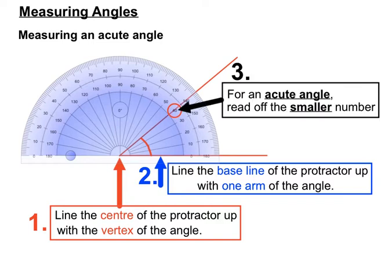And then for an acute angle we'll read off the smaller number. You'll notice there that we have two numbers: we have 140, just here, and we have 40 degrees. Because we're expecting an acute angle, and acute angles are between 0 and 90 degrees, well 40 is the most sensible answer there.